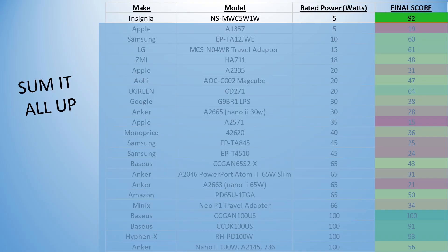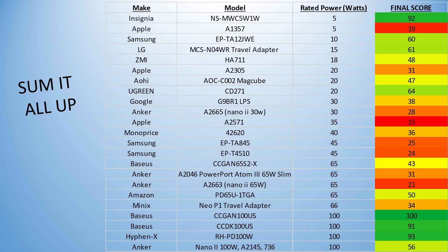Okay, so 5-watt insignia is what you can get now. 10-watt Samsung, 18-watt ZMI, 20-watt Ugreen, 30-watt Google, 45-watt Samsung, 65-watt Amazon Basics, and 100-watt Bassius. It seems like every brand is best at a different category.